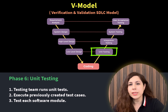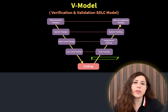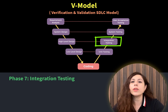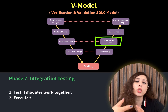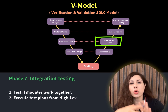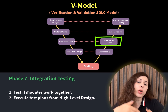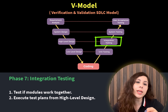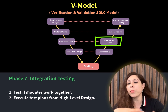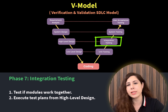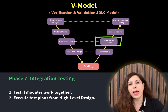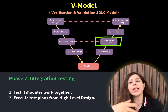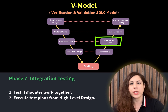After this, the next validation phase is integration testing. In this phase, we test if the different modules work together. For example, in our appointment booking app, we check if a user can log in and schedule an appointment seamlessly. These test plans were already created in the high level design phase and are just executed in this phase.